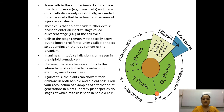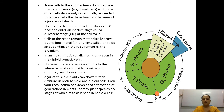In contrast, plants can show mitotic division in both haploid and diploid cells. From your recollection of alternation of generation in plants, you can identify plant species and stages at which mitosis is seen in haploid cells. This will be studied further when we cover alternation of generation. We will continue in the next lecture — by that time, go through this much. Thank you.